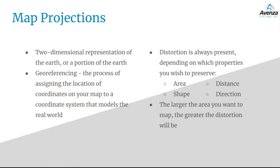Next, we'll talk about map projections. A map projection is a two-dimensional representation of the Earth, or a portion of the Earth. In order to use a projection, your map must be geo-referenced. Geo-referencing is the process of matching locations on your map to points on a coordinate system that models the real world. This enables any GIS software you may use to know where in the world your map is located.